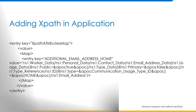Adding XPath in application. Once we get the XPath for custom attributes from the Workday team, we need to add them in the backend. For that we need to edit the Workday application XML file, search for the entry key with XPath attributes map, and in the map add an entry key for the custom attributes, providing the XPath as the value given by the Workday team.